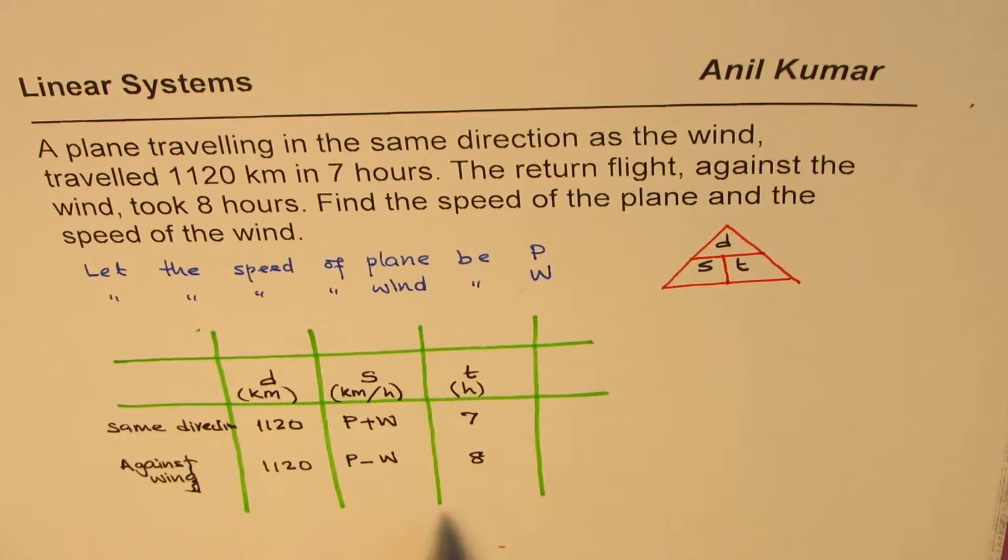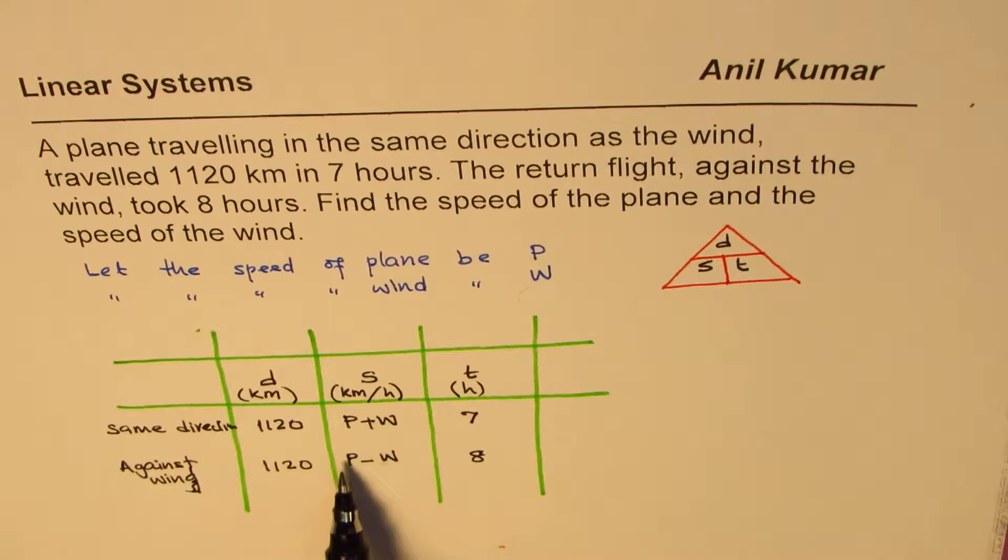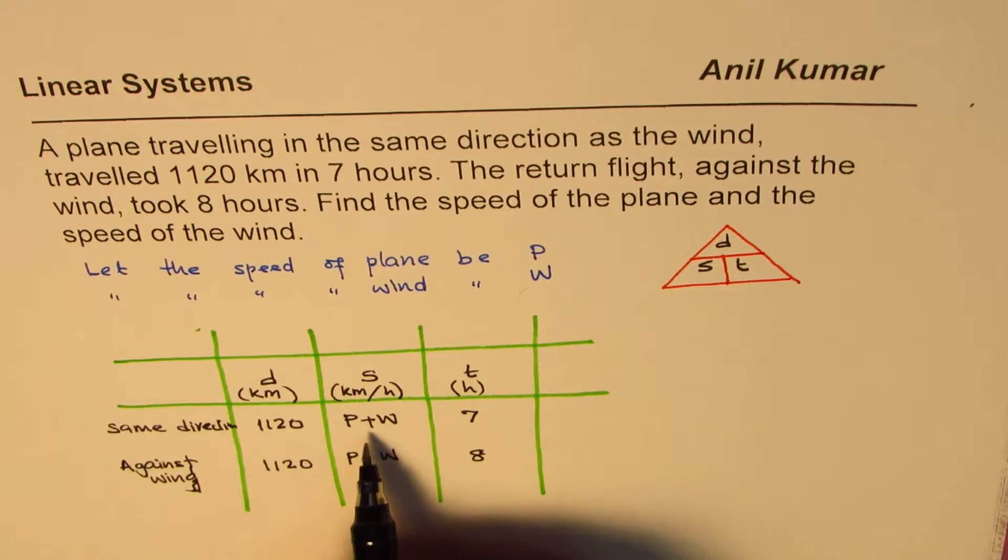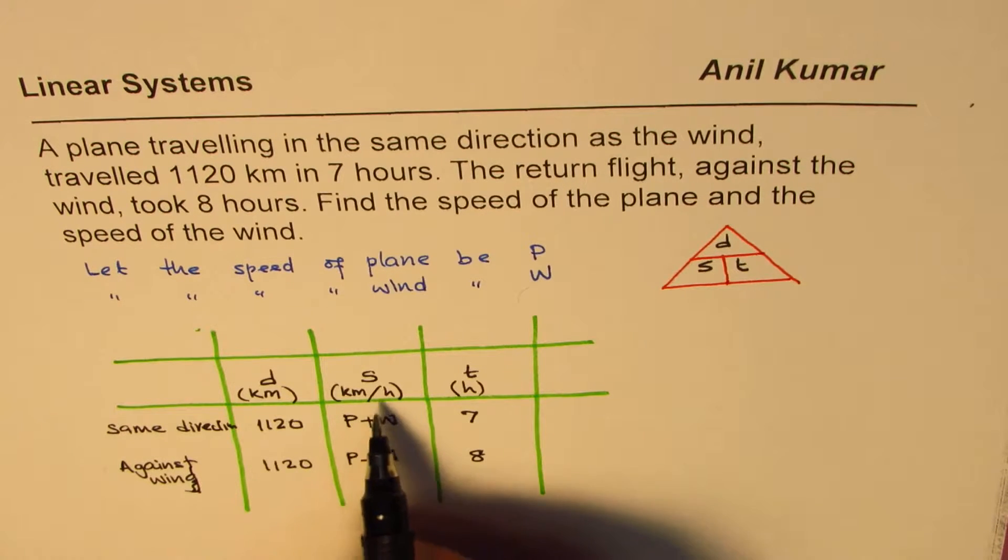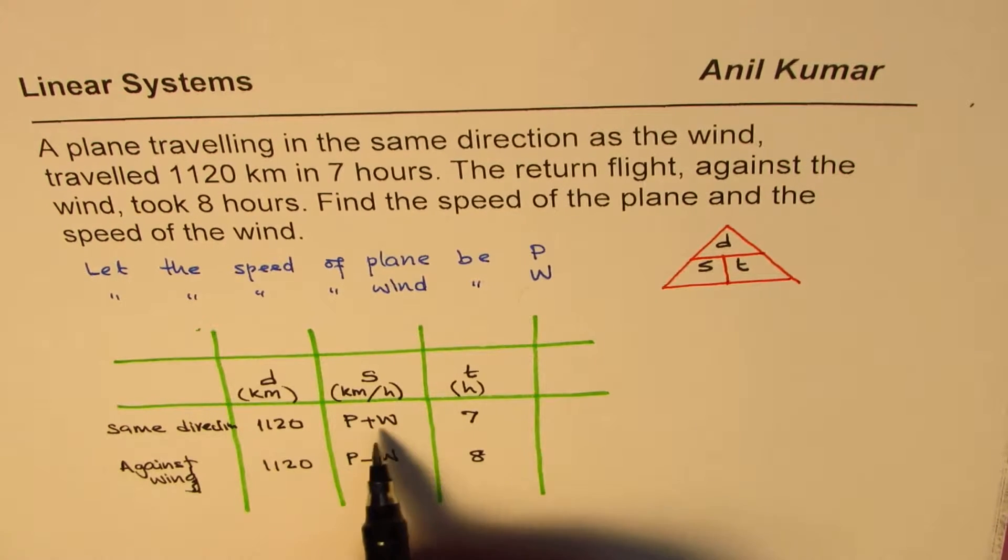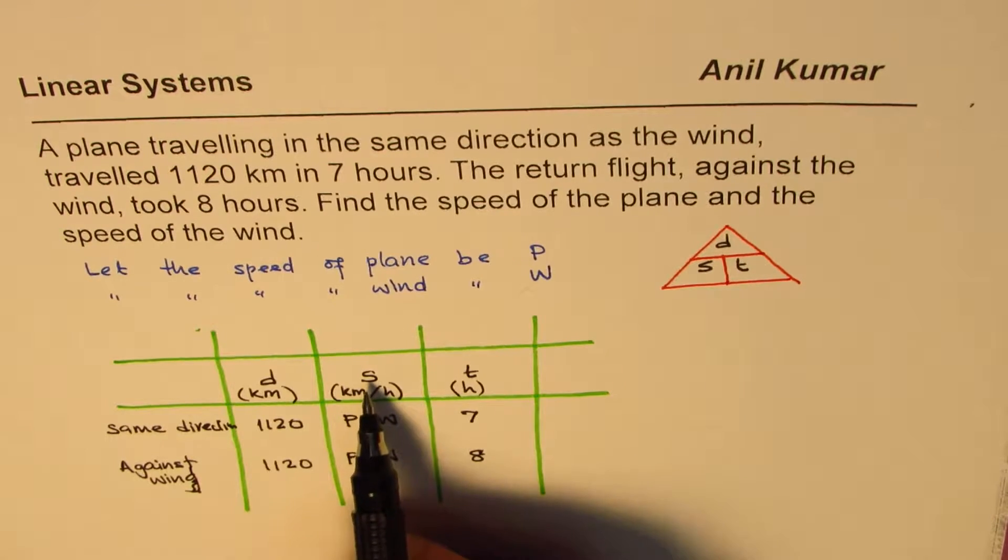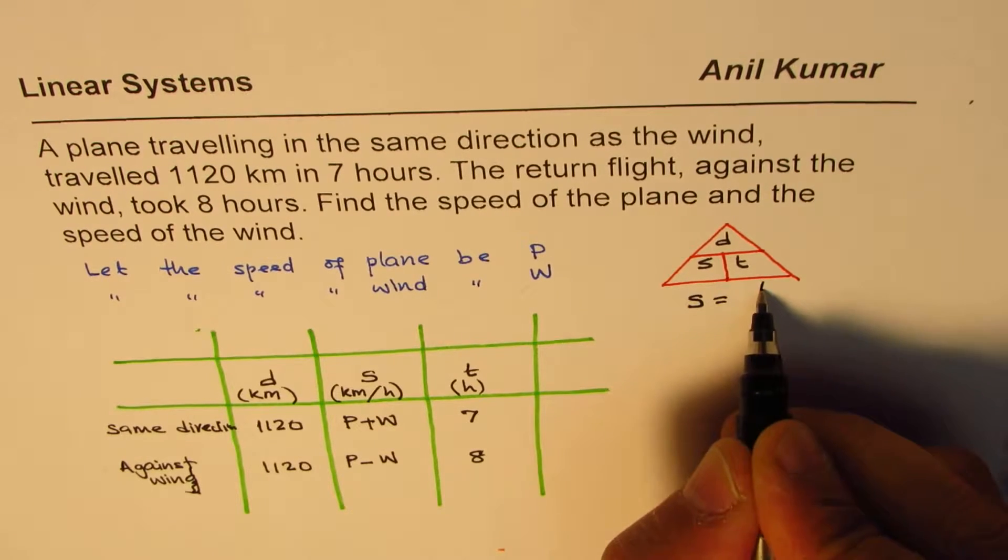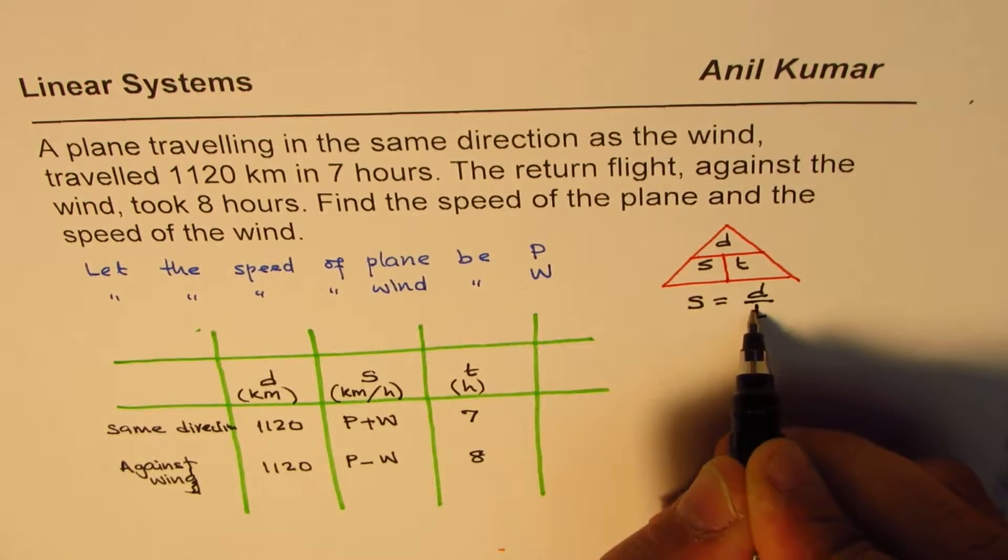So that kind of relates all these things. Now from this relation, we can actually get two equations. We have two variables to solve for. And so these could be easily solved. We need to find what is the speed of plane and the wind. So how is speed related? From this relation, we know speed is distance over time.